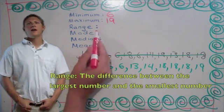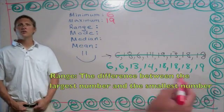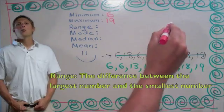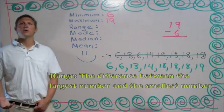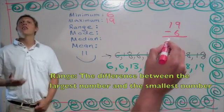Range is defined as the difference between the largest number and the smallest number. So, we subtract 6, the smallest number, from 19, the biggest number, and we get a range of 13.